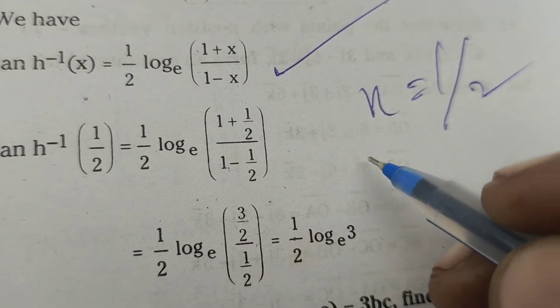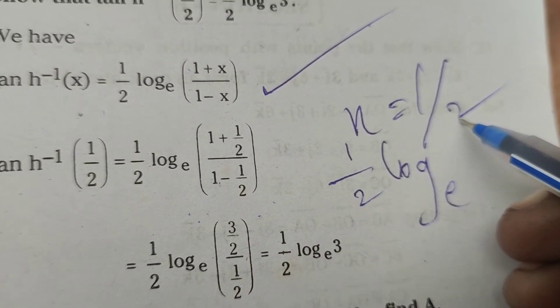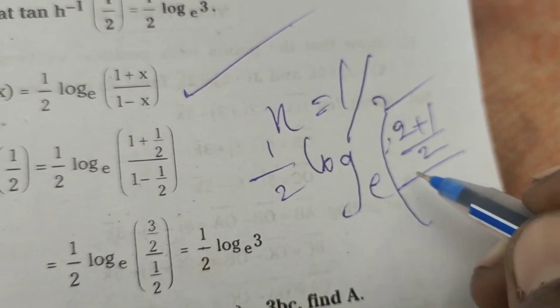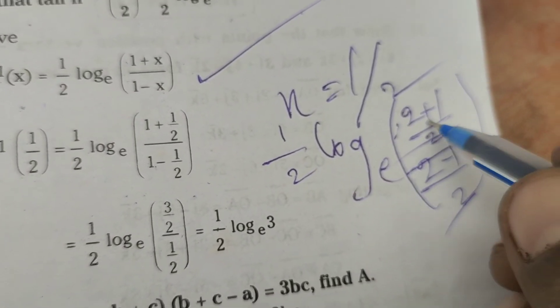Simplifying this: (1/2) log_e((2+1)/2)/((2-1)/2). The 2s get cancelled, giving 3/1.